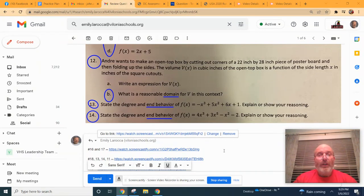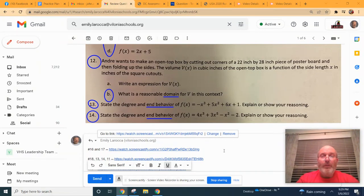Okay so now we're going to look at number 12. We've got the open top box cutting corners out of a 22 inch by 28 inch poster board. You want to know what's a reasonable domain for X in this context.